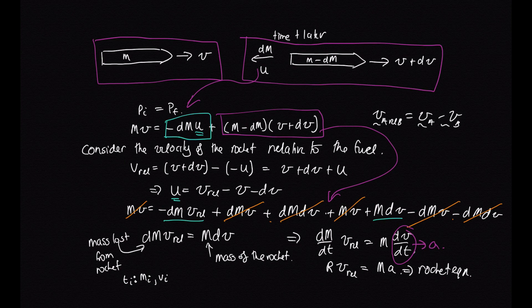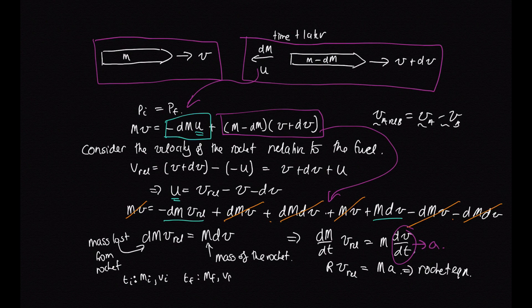Then at time t final, the rocket has mass m final and the rocket has speed v final. Well, what is the change in velocity? To do that, we can once again use this equation here.